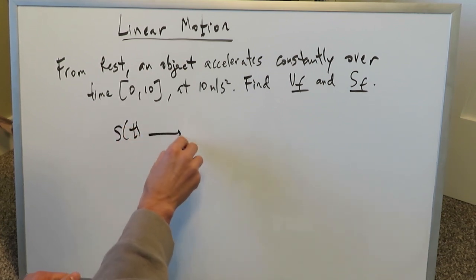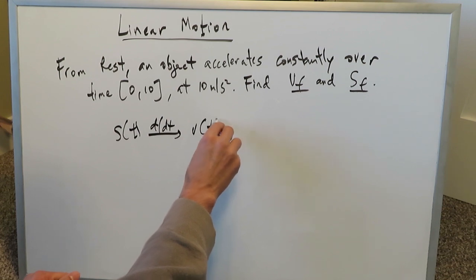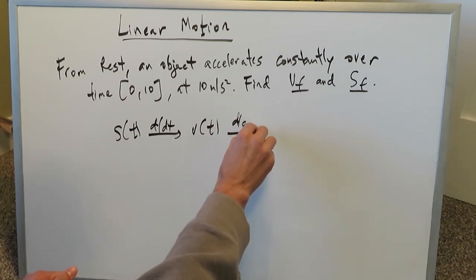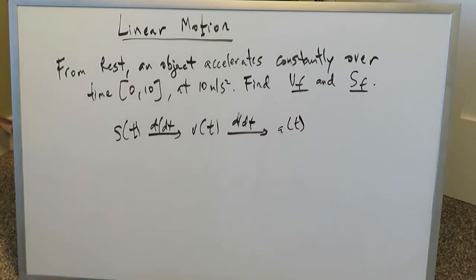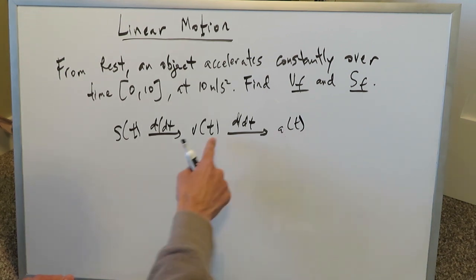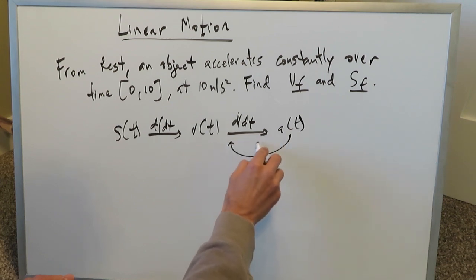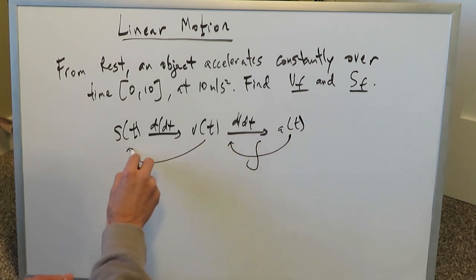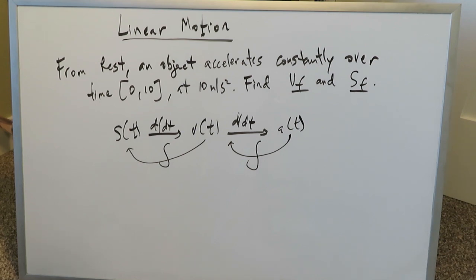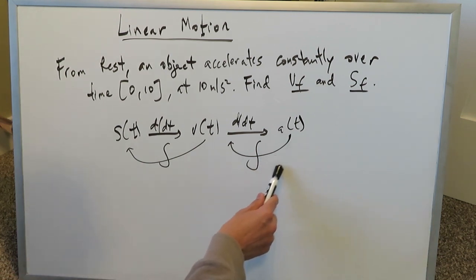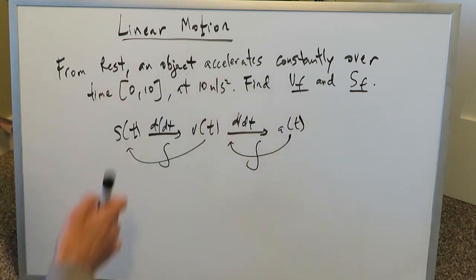The most beneficial hint and tip I can provide you is this: if you have a position function of an object, you can take its derivative to get the velocity function. If you take the derivative of velocity, you end at the acceleration function. If, however, you want to work backwards, you can do the integral of your acceleration to get velocity, and the integral of your velocity function to get the position function. This is what I call the best loop.